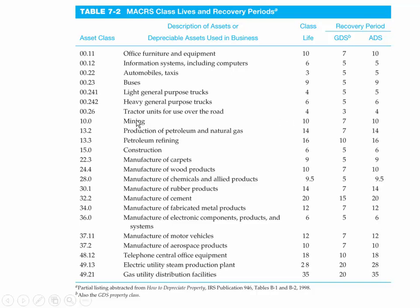For instance, equipment used for mining: according to the GDS recovery period, that equipment is assumed to last seven years and at the end of seven years it has no useful life. That may or may not be true — you may be purchasing equipment that's more durable. You get to depreciate it quickly and then continue using the item even after it has no value on paper. But sometimes, an automobile for example, they assume the automobile lasts five years, and if your ownership period is less than that or it wears out more quickly, that's actually bad for you.